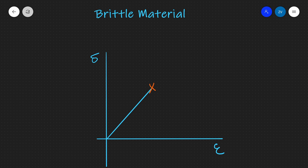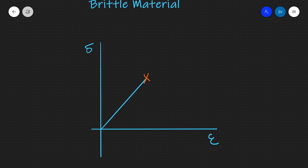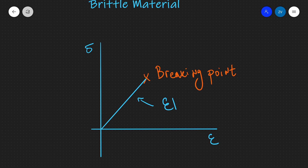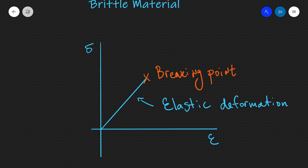Now let's look at the behavior of brittle materials. On the stress against strain graph, a brittle material exhibits elastic behavior and then suddenly snaps — it abruptly reaches its breaking point. Hooke's law is fully obeyed right up until that breaking point. An example is glass: apply a force, it extends a little, then suddenly fractures.